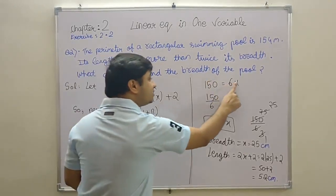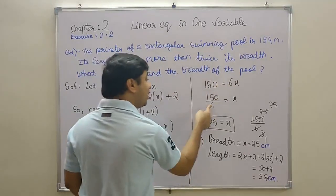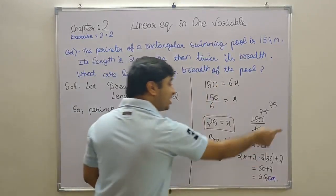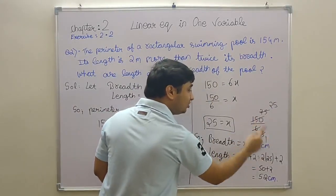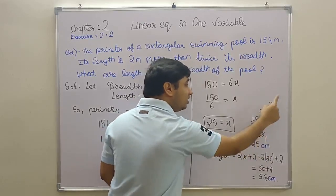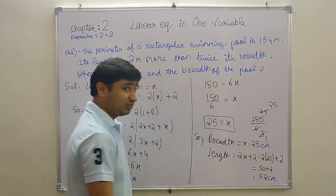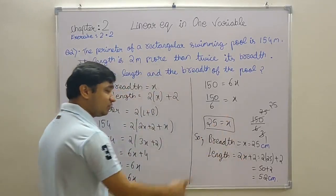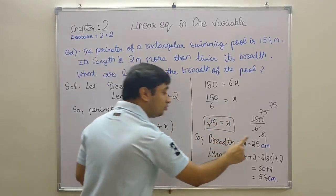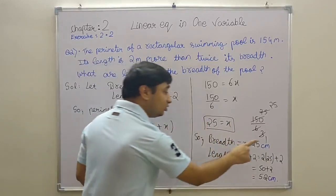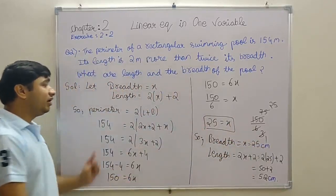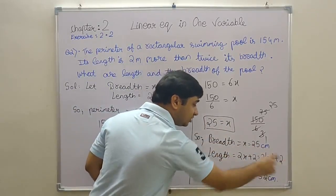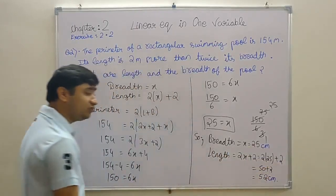I've done the simplification on the side: 2 threes are 6, 2 seventy-fives are 150, 3 ones are 3, 3 twenty-fives are 75. So x is 25. This is your answer. The breadth we got is x equals 25, that is 25 centimeters. Pay attention to the units. Now for length, whatever value x has, we put it here. That comes to 2 times 25 plus 2, that is 50 plus 2, that is 52 centimeters.